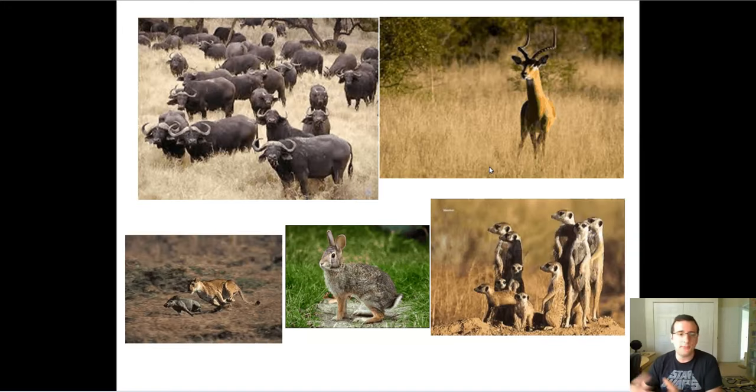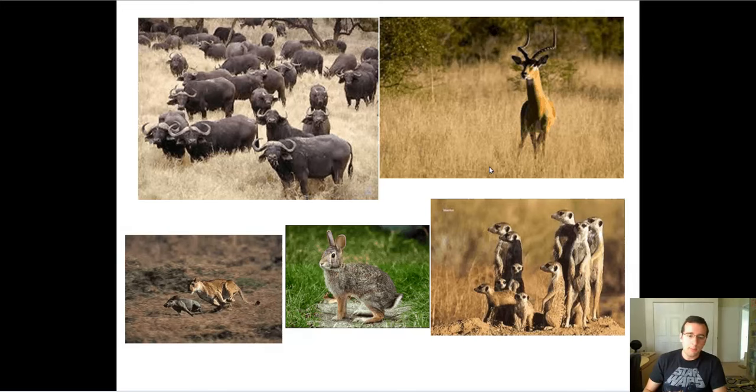Likewise, the prey has to defend itself from the predator. So being vigilant, having better hearing, long ears, having behaviors like the bunnies, which they actually act dead when they're not really dead, so the predator stops chasing them, and then all of a sudden they take off, being better at running, running in zigzag, unpredictable patterns, trying to run as fast as you can, being part of a herd so that you can have strength in numbers. All of these things are different ways in which preys have tried to cope with the predators.